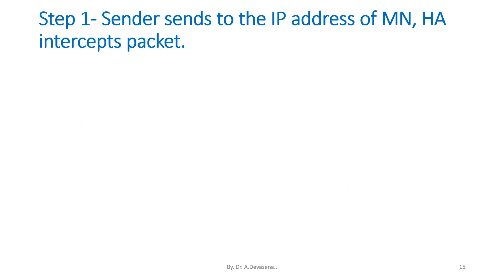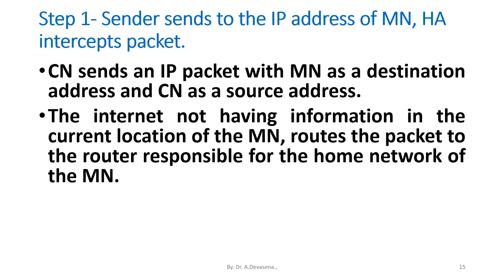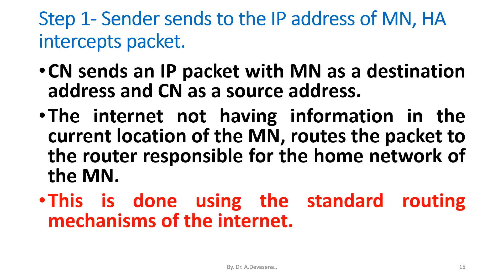Step 1 detail: CN sends an IP packet with MN as the destination address and CN as the source address. The internet, not having information on the current location of the MN, routes the packet to the router responsible for the home network of the MN. This is done using the standard routing mechanisms of the internet.